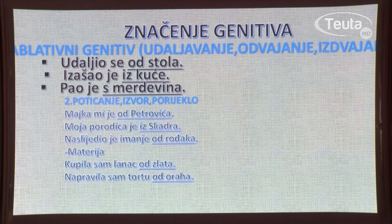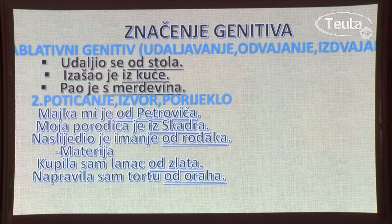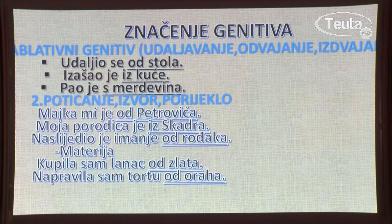Drugo značenje genitiva je poticanje, izvor, porijeklo. Majka mi je od Petrovića. Često pitanje u crnogorskom jeziku: od kojih si? Moja porodica je porijeklom iz Skadra. Naslijedio je imanje od rođaka. Također tu spada i materija — od čega je nešto napravljeno? Kupila sam lanac od zlata — lanac je napravljen od zlata. Napravila sam tortu od oraha.